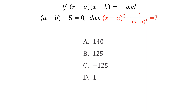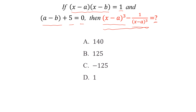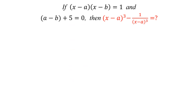Welcome back to my YouTube channel. In today's video, we are going to solve this question. The question is: if (x - a)(x - b) = 1 and a - b + 5 = 0, then what is (x - a)³ - 1/(x - a)³ equal to? We need to find the value of this expression and the correct option. Let's begin to solve the question.